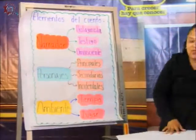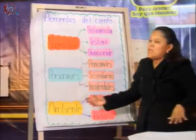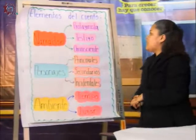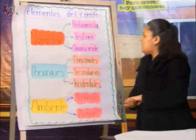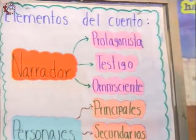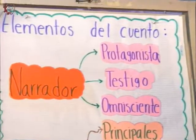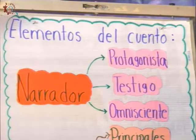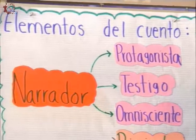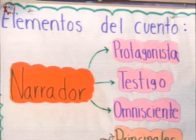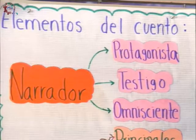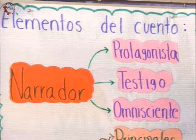Enseguida vamos a revisar los elementos de un cuento. El cuento es una historia que tiene un narrador, personajes y un ambiente. Podemos encontrar tres tipos de narradores: el protagonista, el testigo y el omnisciente. El narrador protagonista es aquel que cuenta su propia historia en primera persona. El narrador testigo es un personaje en la historia, pero no el principal; nos cuenta la historia del personaje principal participando también como personaje. Y el narrador omnisciente es aquel que nos cuenta la historia sin participar en ella.